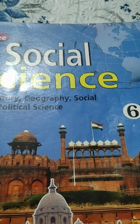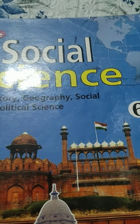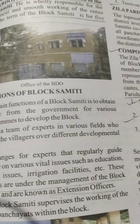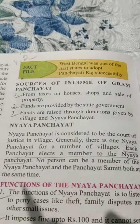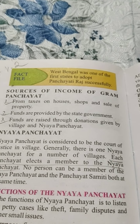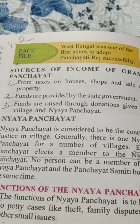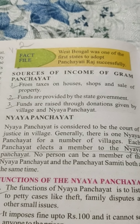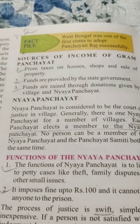Dear students, welcome to the Standard 6 Social Science class. Today I will teach you Part 3, Civics, Chapter 5. Open page number 243. Today we will discuss sources of income of Gram Panchayat. There are three points: first, taxes on houses, shops and sale of property; second, funds provided by the state government; third, funds raised through donations given by the village and Naya Panchayat.